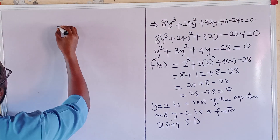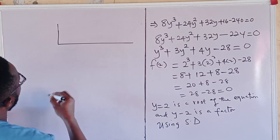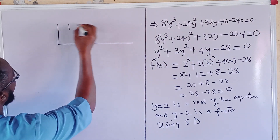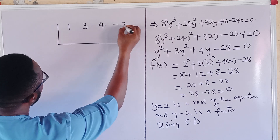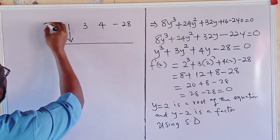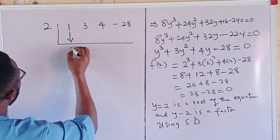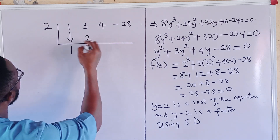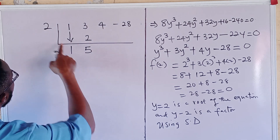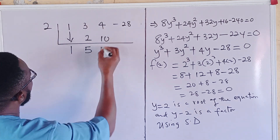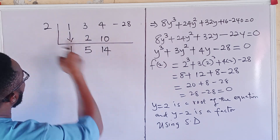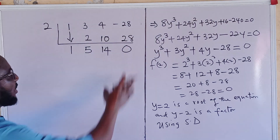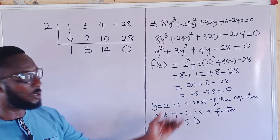Drawing the synthetic division bracket, the coefficients of the polynomial are 1, 3, 4, minus 28. We bring down 1. Then: 2 times 1 is 2, and 3 plus 2 is 5. Then 2 times 5 is 10, and 4 plus 10 is 14. Then 2 times 14 is 28, and 28 minus 28 is 0. The remainder is 0, confirming y = 2 is a root.